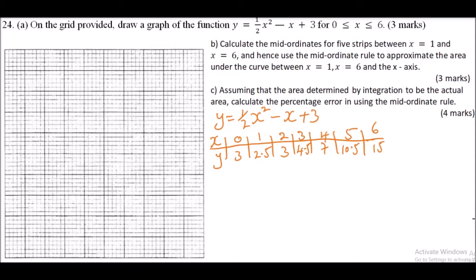On our grid, the x-axis runs from 0 to 6. The highest value of y is 15, so for the y-axis we can use a scale with markings at 5, 10, 15, and 20. That gives us a good scale for the y-axis.